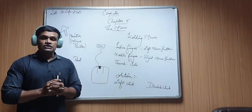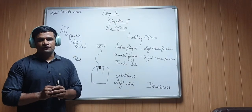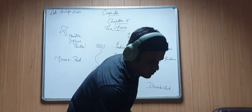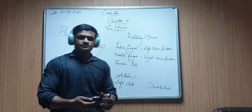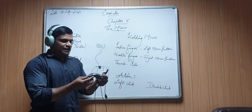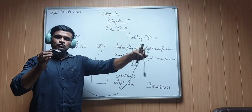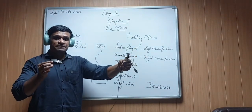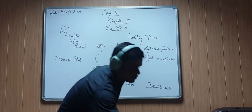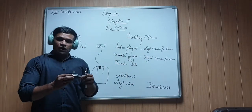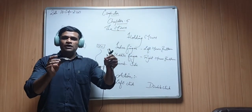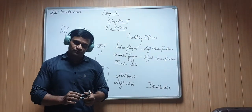Mouse is also known as a pointing device. This is the small device which we are talking about — the mouse. It is really small and is connected to the computer, or you can say to the CPU, with the help of a wire. Nowadays, in the market, we can also get a mouse without a wire — those are wireless mice — but the traditional or normal mouse has a wire which is connected to the CPU.